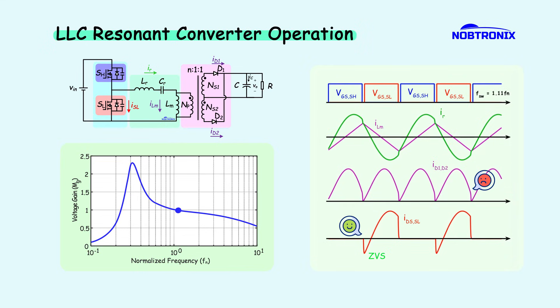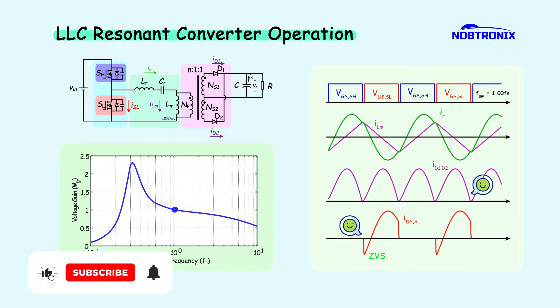At resonance, the diode current reaches zero when turning off, achieving zero current switching for the diodes. On the other hand, the switch waveform indicates that the switches continue to turn on under zero voltage switching condition.